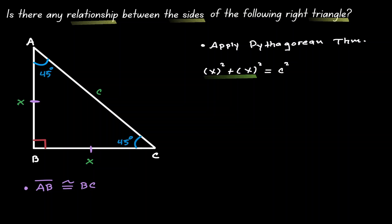Now that on the left hand side of this equation we have the same variable, we can simplify this. Now let's bring down the C squared. Now we combine them two, X squared plus X squared, that is two X squared.